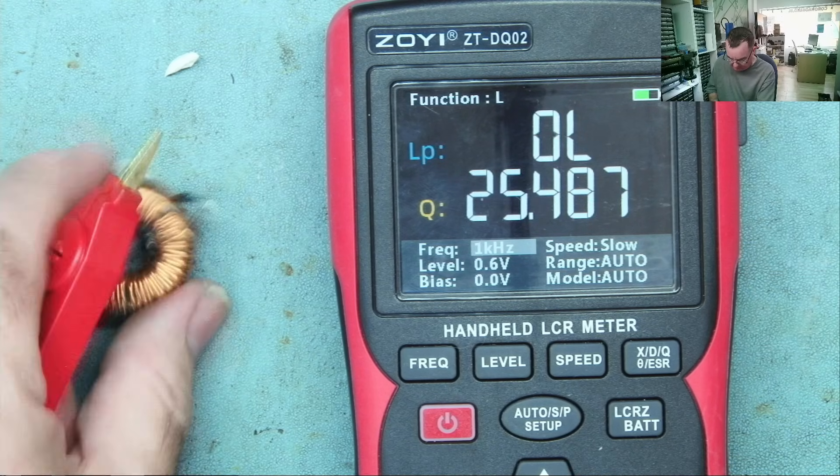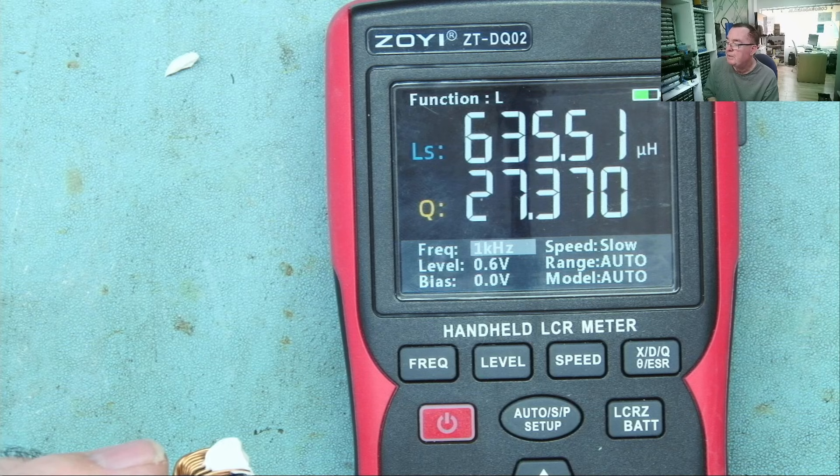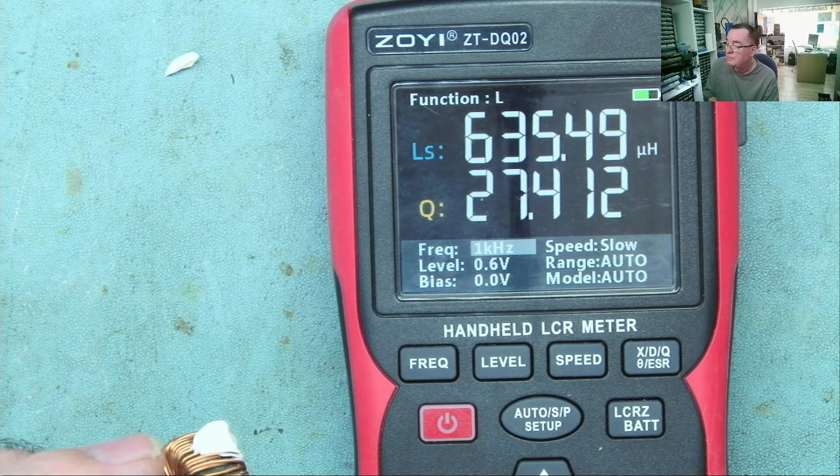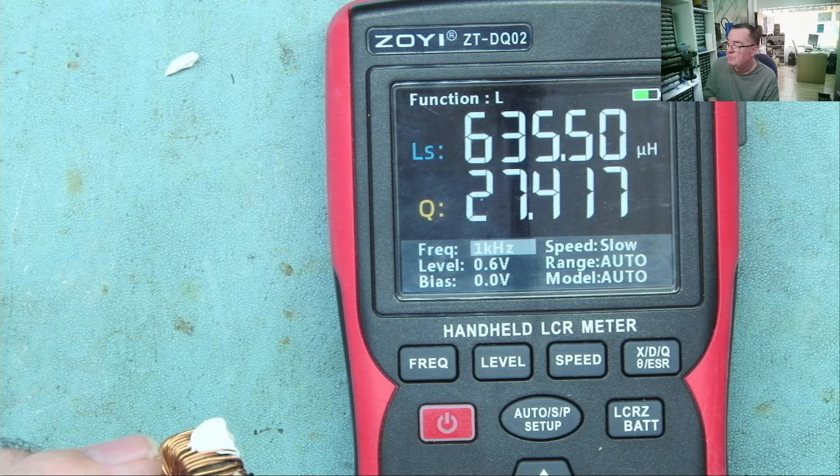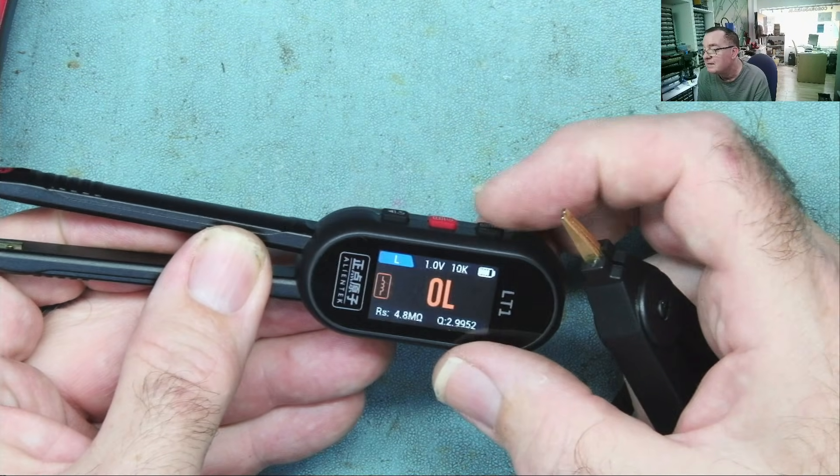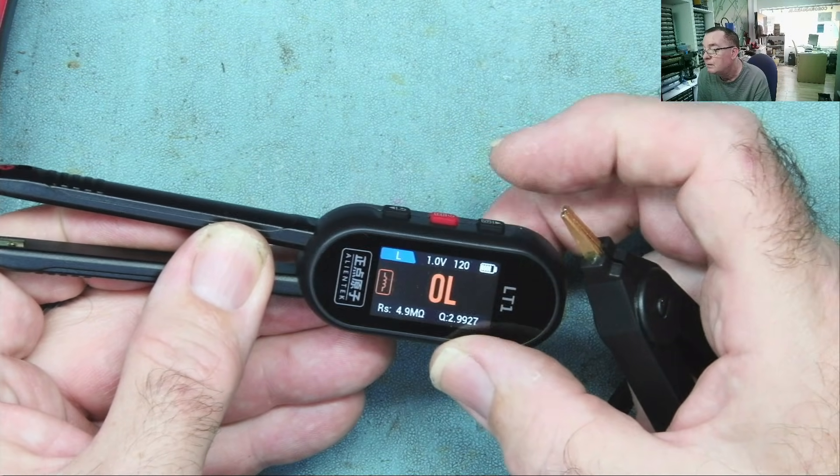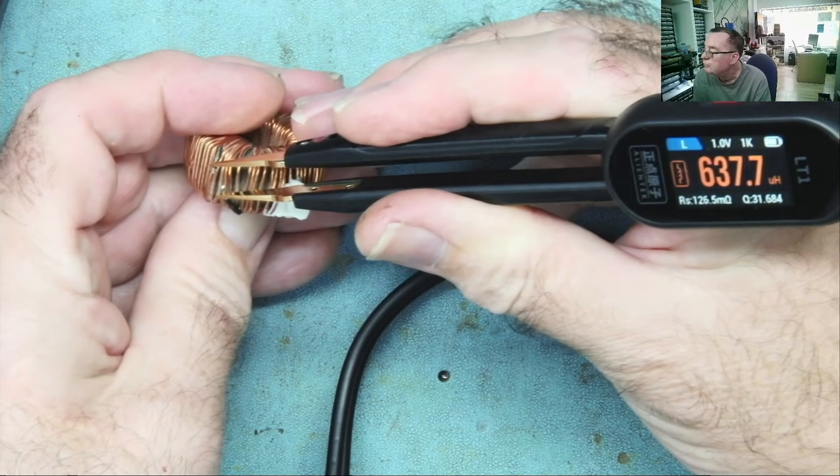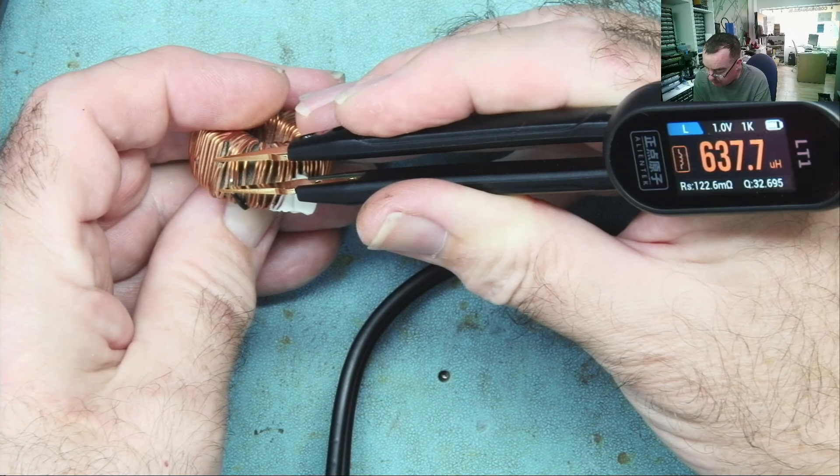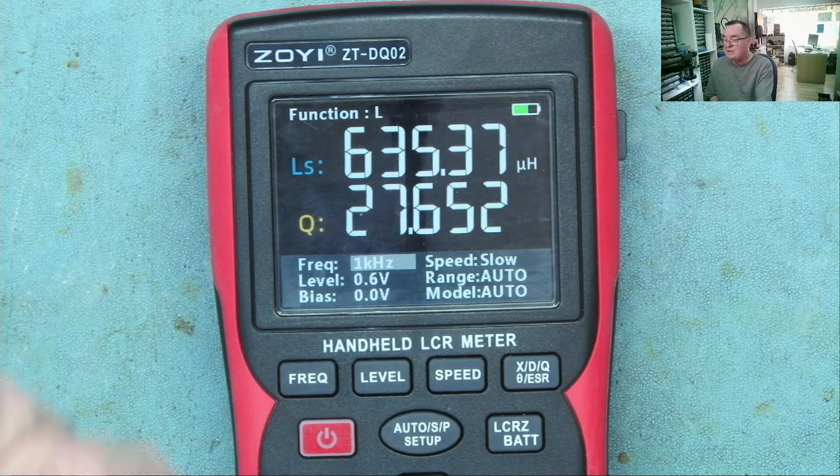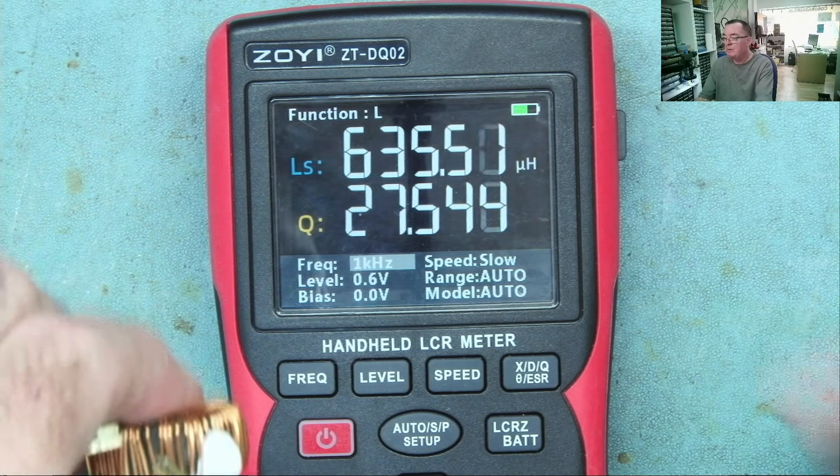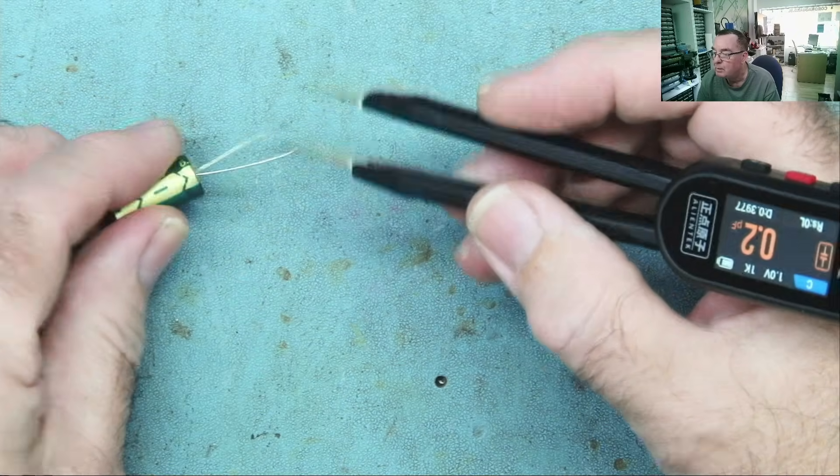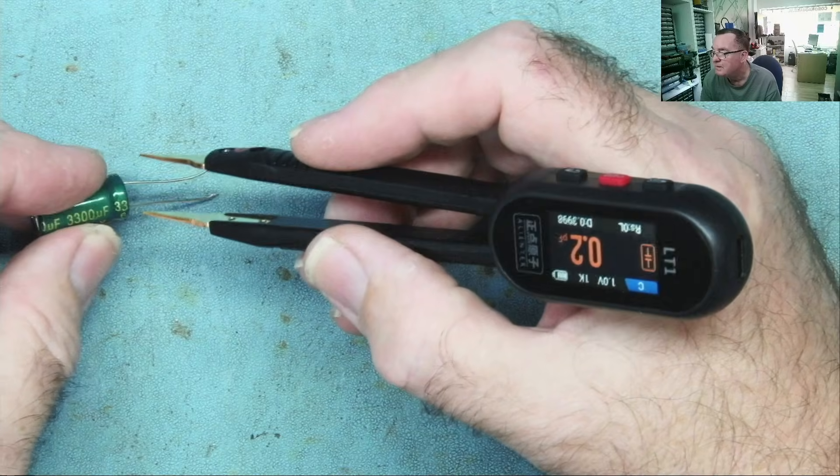I'm interested to see how that compares with my DER EE DE-5000, which is a pretty accurate meter to be honest. Let's see what we get: 635.9. That's at 1 kilohertz. I'm not sure what I had the other one set to—in fact, it's on 10 kilohertz actually, so we'll put it onto the same. 637—that's damn close. And that's using Kelvin probes, this is just tweezers.